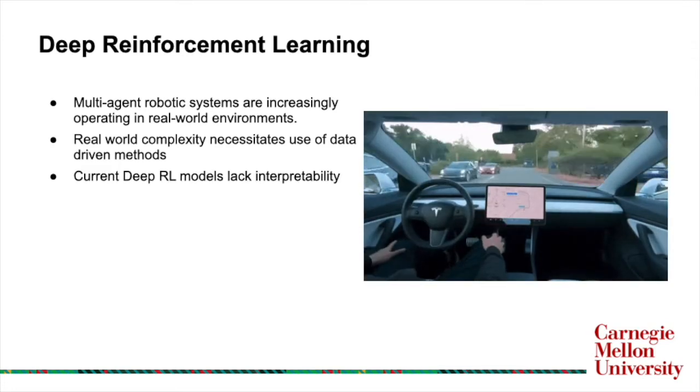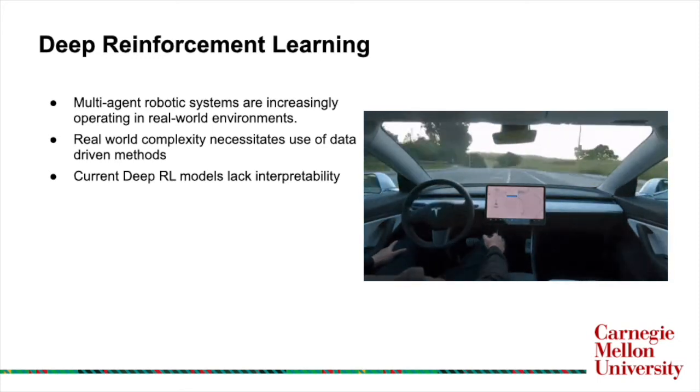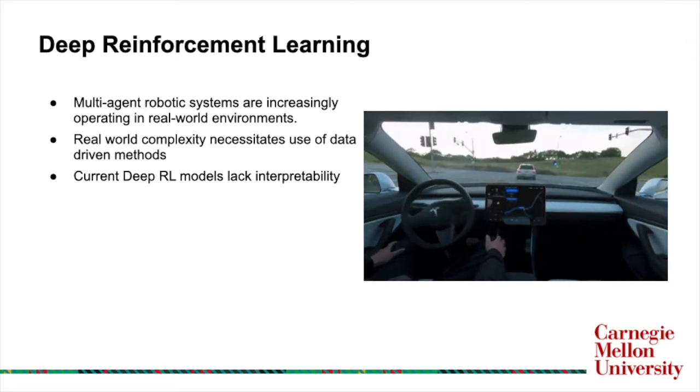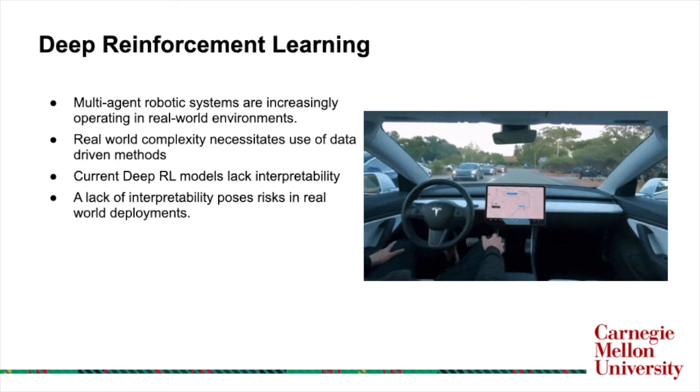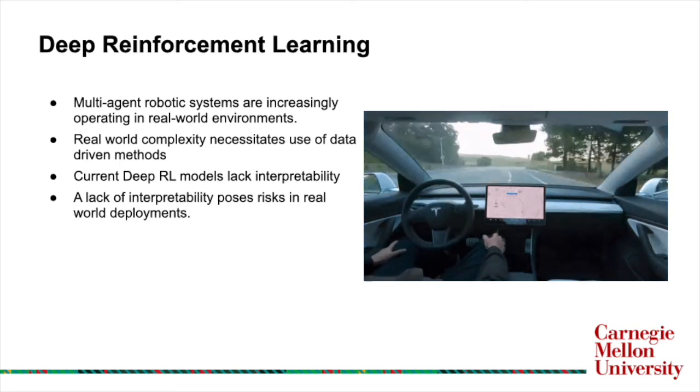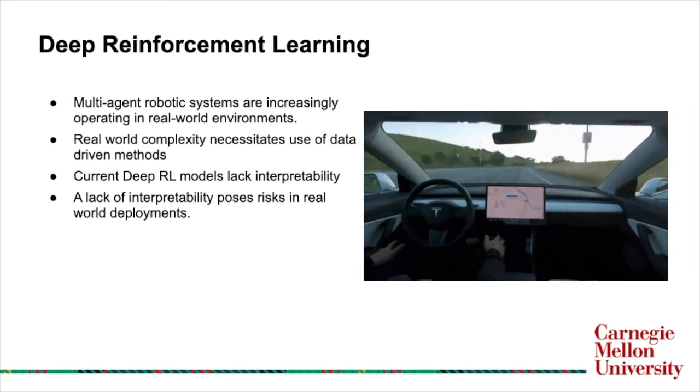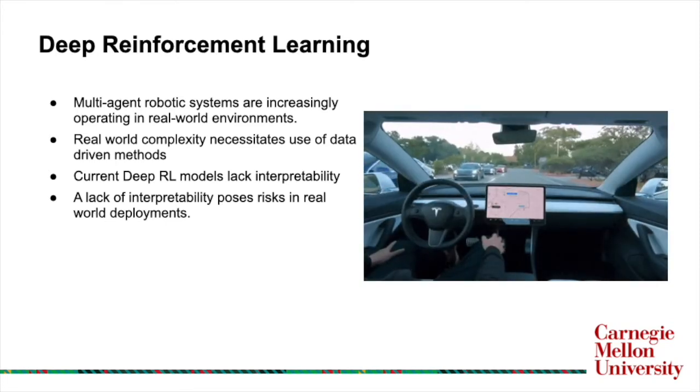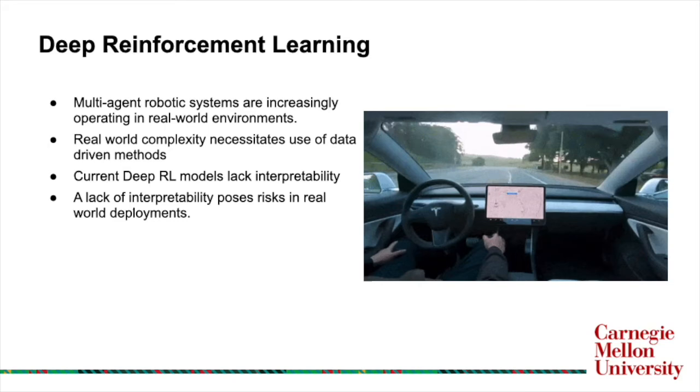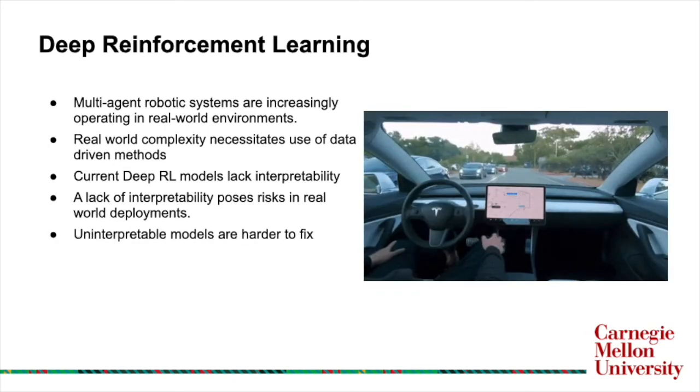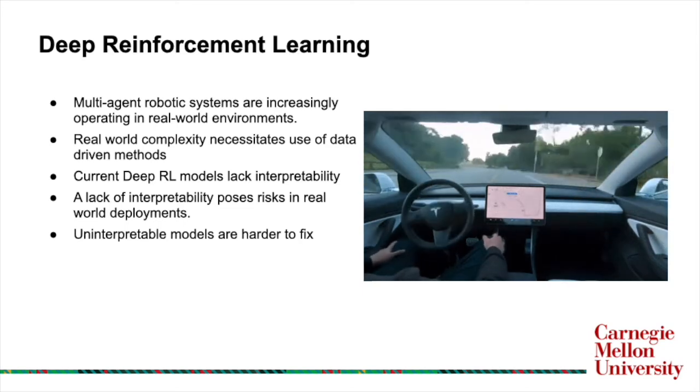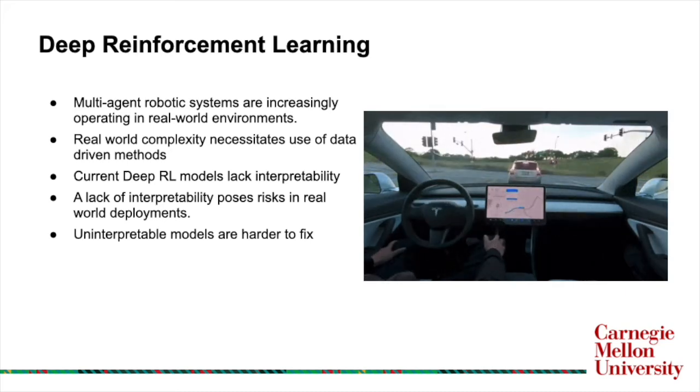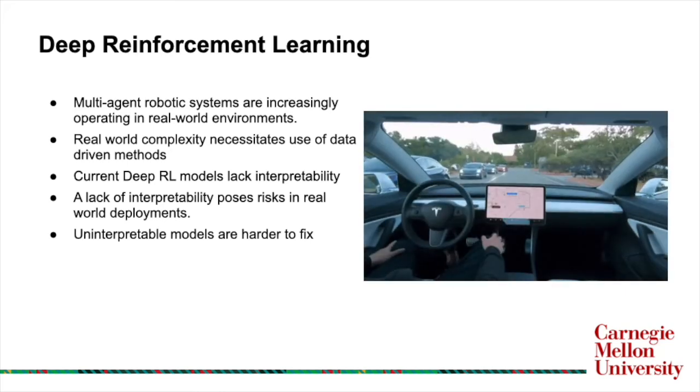While these methods have shown great ability to generate effective and generalizable models, they do so at the expense of interpretability, and models often remain inscrutable to human operators. This lack of interpretability poses a significant risk, especially with end-to-end models, where a rationale cannot be readily determined for why a model produced a certain decision, let alone provide a mechanism for intervening and correcting the rationale should it be incorrect. The ability to inspect and update is especially important for robotic systems, where we often encounter shifts in data distributions when transferring policies from simulated environments to the real world.